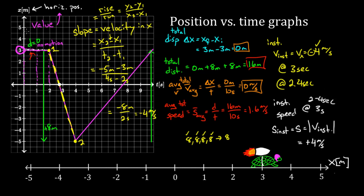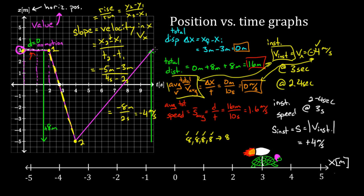Whew — that was a lot! To recap: the value of a horizontal position versus time graph gives you the horizontal position. The slope of the graph gives you the velocity in the x direction. The average slope gives the average velocity; the instantaneous slope gives the instantaneous velocity, and on any straight-line segment these are the same. The instantaneous speed is the magnitude of the instantaneous velocity, assuming motion in only one direction.